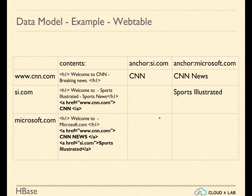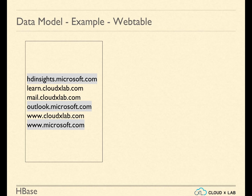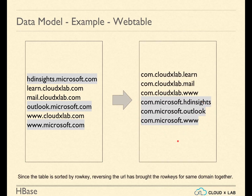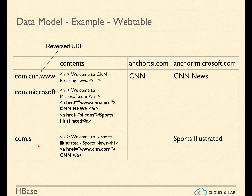We often need the data for all subdomains under a domain to be stored together. Since the data in an HBase table is ordered by row key, keeping the reversed URL as the row key brings the records of the same domain together. If the URL were the key, data would be in alphabetical order — for example, hdinsights.microsoft.com followed by learn.cloudxlab — and all rows for Microsoft would not be together. But if we reverse the URLs, the records for the same domain are grouped together after sorting.